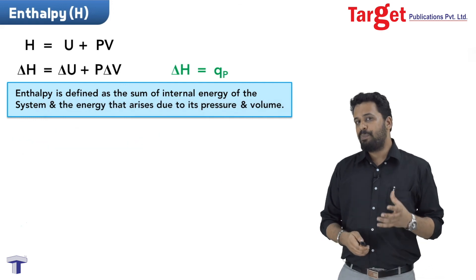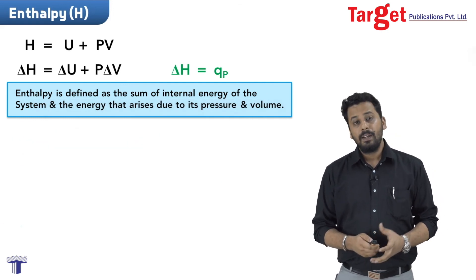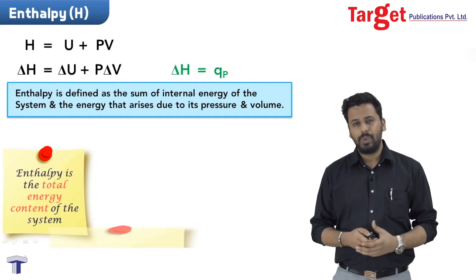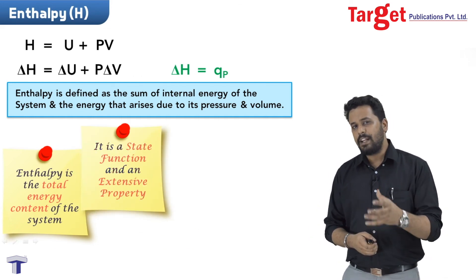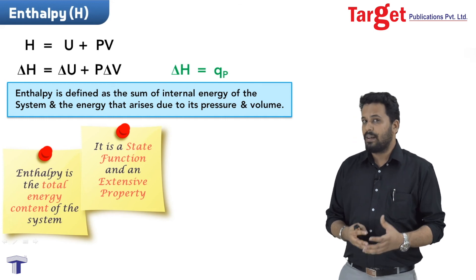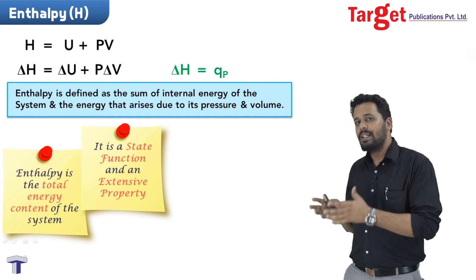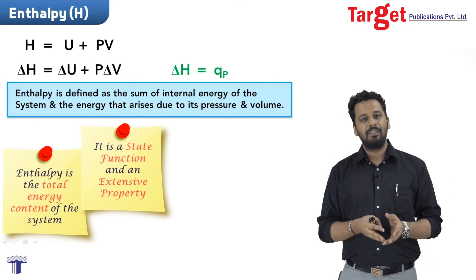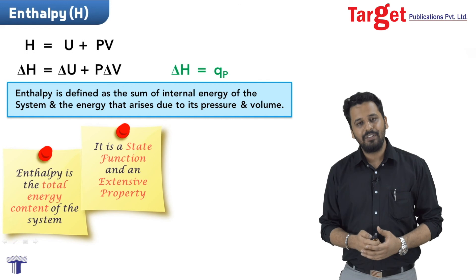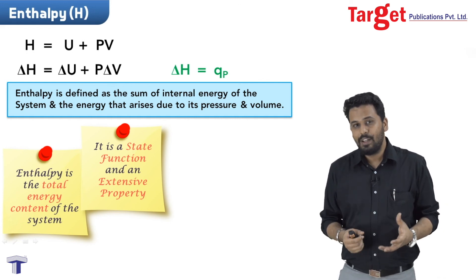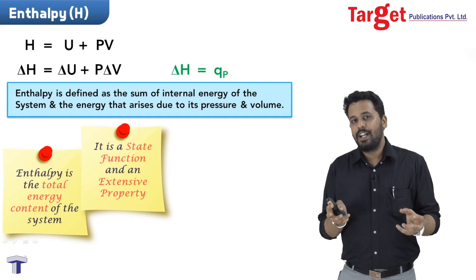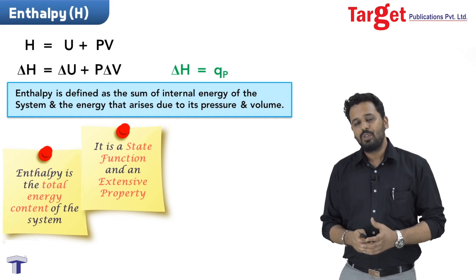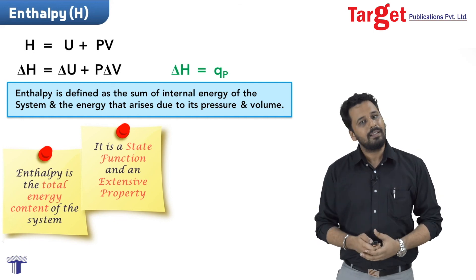Now there are some important points about enthalpy. First, enthalpy is the total energy content of the system. Second, enthalpy is a state function and it is an extensive property. We already proved H is a state function because U, P, and V are all state functions. As for extensive property — if you have more amount of something, it will have more internal energy, and therefore the enthalpy will also be more. It depends on how much matter is present.